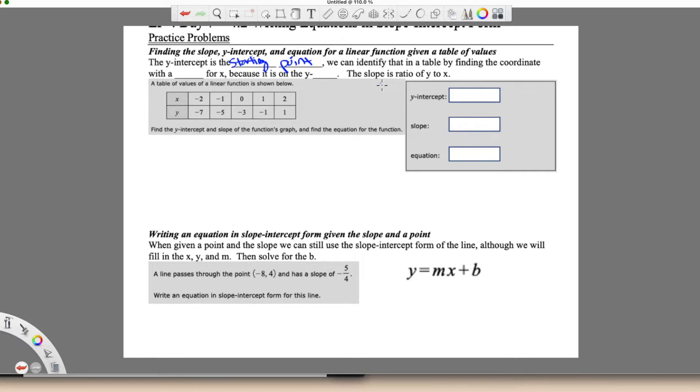And with that one, what we want to know is when x is zero. So we can identify this in the table by finding the coordinate with a zero for x. So immediately I can come over here and go, oh, there's my starting point, there is my y-intercept, which is negative three.